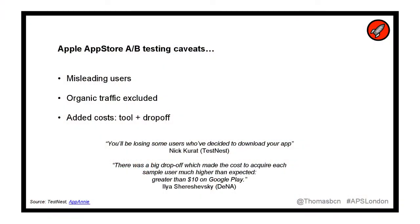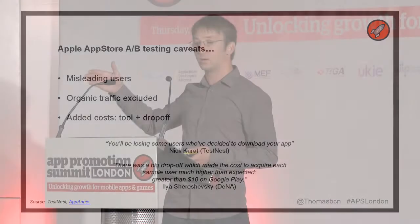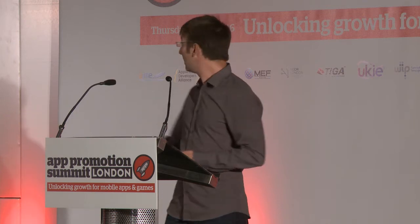There are a couple of problems with testing this way. The first is that you're misleading users. I don't like misleading my users because eventually people will click to download — what's going to happen? They will go back to the App Store and find something different, creating a drop-off. If you're doing a major revamp of the whole store listing, people will see a different page and ask, 'Is this the same app?' Second, you can only do it on paid traffic, because you can never control organic traffic from the App Store. Third, it costs money — the tool isn't cheap, plus the traffic you're sending there. I've researched the drop-off; I'm pretty sure it's at least 20%, but I can't prove it.